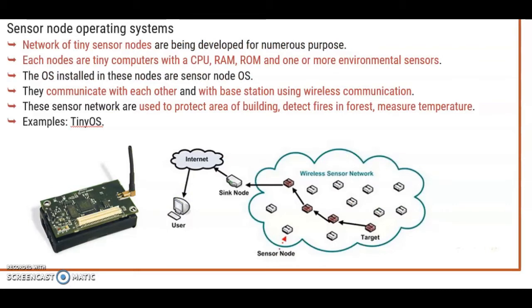Sensor node operating systems are used in sensor node devices — not just plain sensors. A sensor node in a network is a device that contains a CPU, RAM, and ROM. There are sensors placed in the environment, for example a forest fire detector.